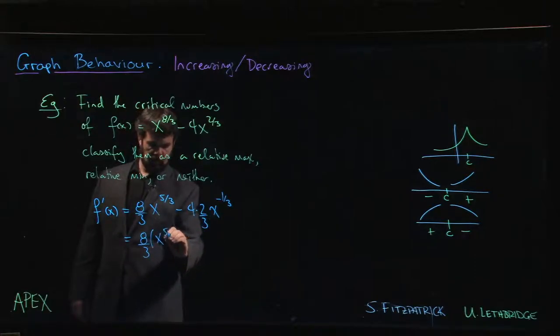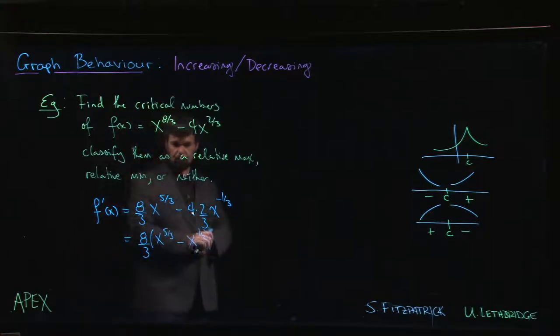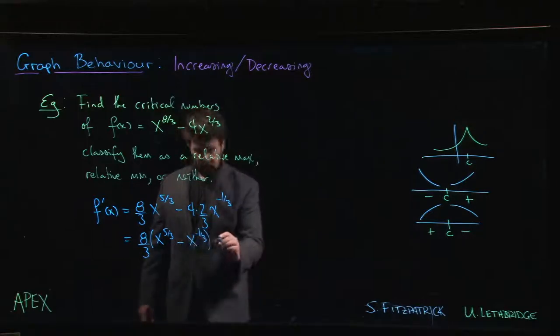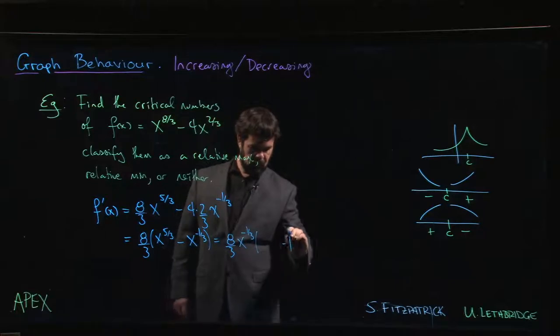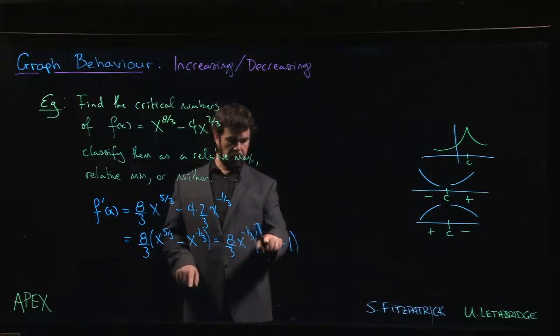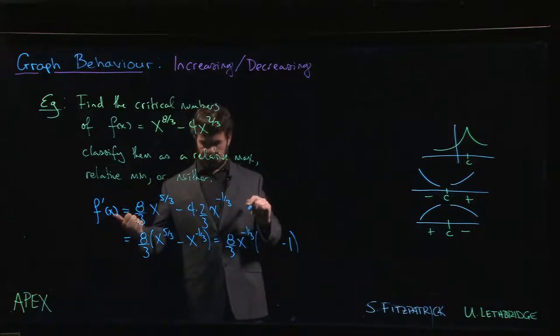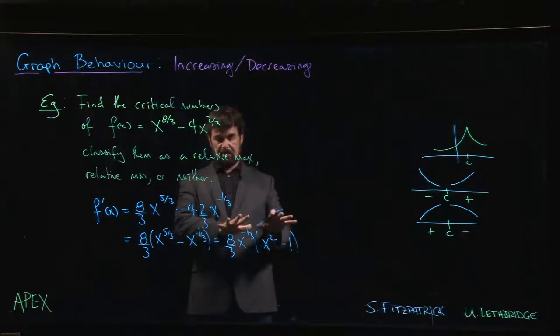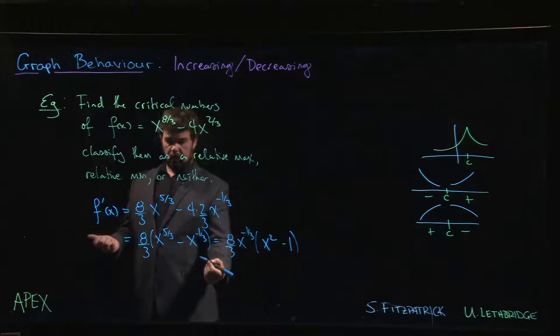Now there's an 8 over 3 that we can factor right out: 8/3 times x to the 5/3 (4 times 2/3 is also 8/3). Now you've got a couple of options - some people are comfortable with factoring out a negative power. If we bring the x to the minus 1/3 out front, that's going to be minus 1. We need something so that when we multiply by x to the -1/3 we get x to the 5/3, so what minus 1/3 gives us 5/3? 6/3 minus 1/3 gives us 5/3, and 6/3 is 2, so we have x squared minus 1.